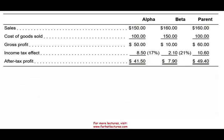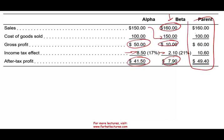If Alpha sold to Beta at $150, the profit for Alpha is $50, their income tax is $8.50 (at 17%), and their after-tax profit is $41.50. Beta will still sell to external users for $160, but their cost becomes $150, leaving only a $10 profit. They pay $2.10 in taxes, and their after-tax profit is $7.90. Overall, the parent company makes two additional dollars per unit in consolidated profit.